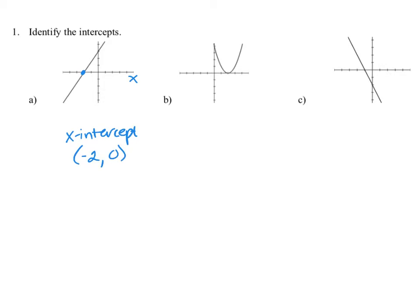For the y-intercept, we want to look at where the graph crosses through the vertical axis, the y-axis. We're using one unit for each scale here. So our y-intercept happens when x is equal to 0 and y is equal to positive 3.